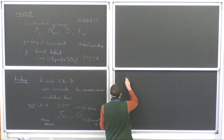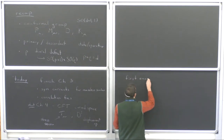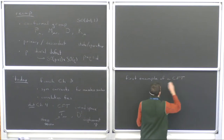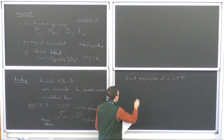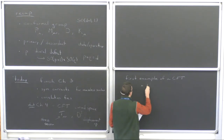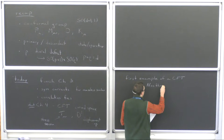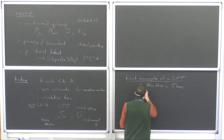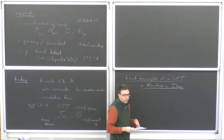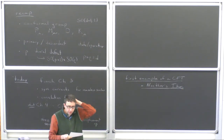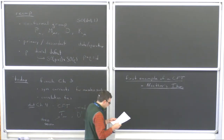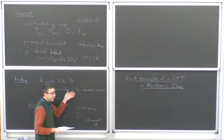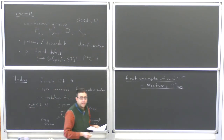Let's start with our first example of a CFT that we're going to discuss in the context of Noether's theorem. I'm assuming everyone has some familiarity with classical field theory and quantum field theory — you've had some kind of introductory QFT course, so you've probably seen Noether's theorem. We're going to apply it in the context of conformal symmetries and see what comes out from there.